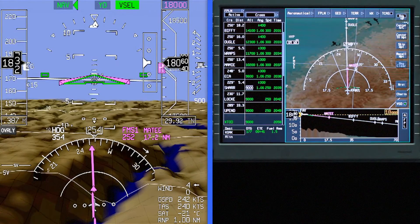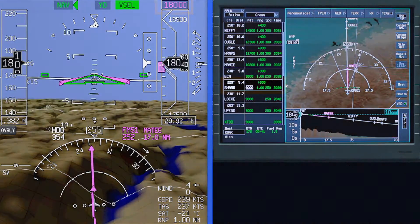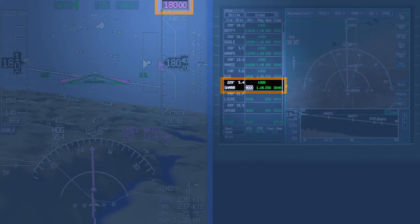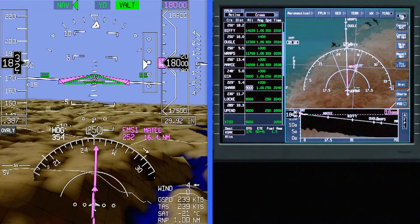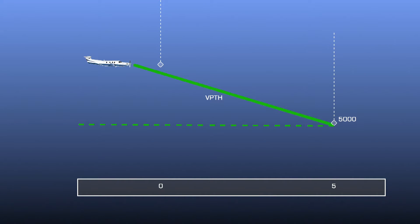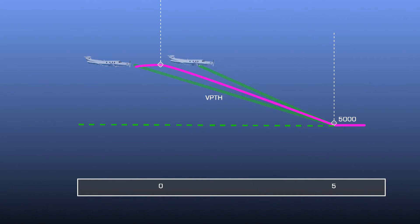All V-NAV modes except VGP honor the altitude set in the pre-selector. So if the pre-selector is set above an FMS target altitude, the aircraft will level off at the pre-selected altitude. The vertical direct-to option creates a path from the current altitude to the selected altitude constraint. Similar to V-Path mode, vertical direct-to can only be used for descents. This function can be used to start an early descent to an altitude constraint prior to reaching the FMS calculated top of descent point, or for a late descent when the top of descent calculated by the FMS has already been passed.